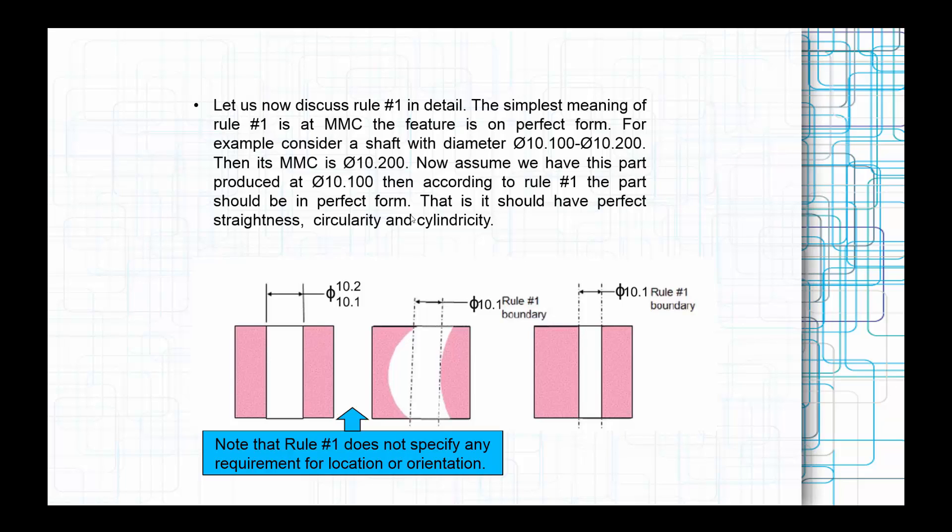That means there is a limitation which is very important. This rule is not about locating the parts. It is about fitting inside that typical envelope. So if you manufacture in all these scenarios, you need to accept per Rule Number 1, so that it should have a perfect straightness, circularity, and cylindricity. That's all.